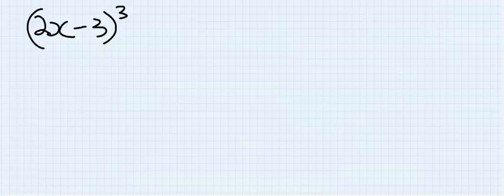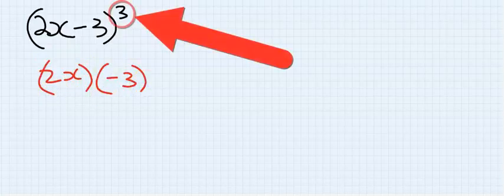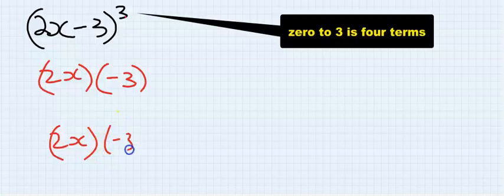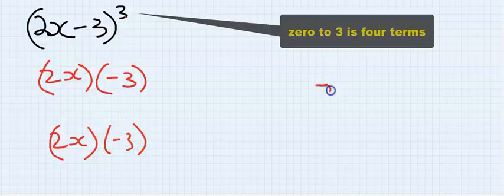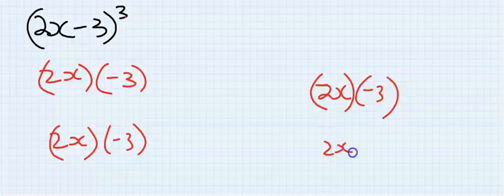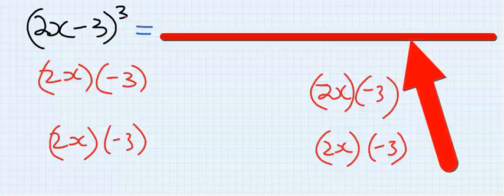Let's solve this using Pascal's Triangle. 2x is one term, minus 3 is the other one. The power is 3, so I'm going to write it 4 times: 2x and minus 3. This is the first thing you need to do. I will write our final answer here.